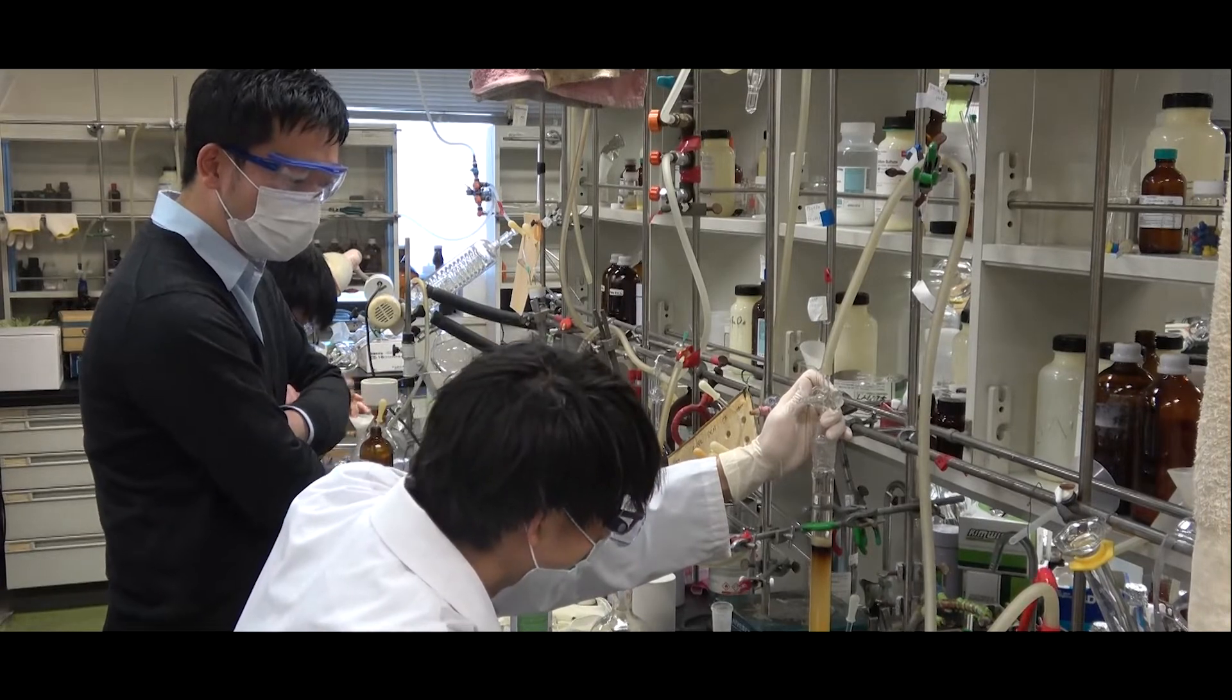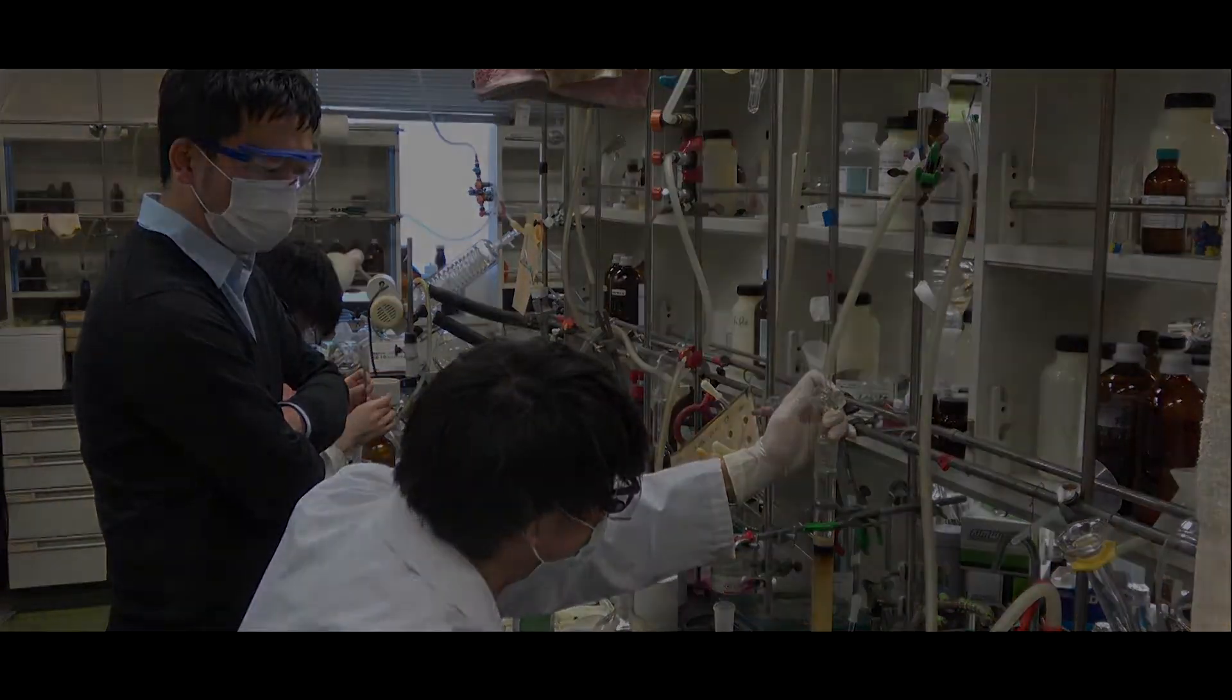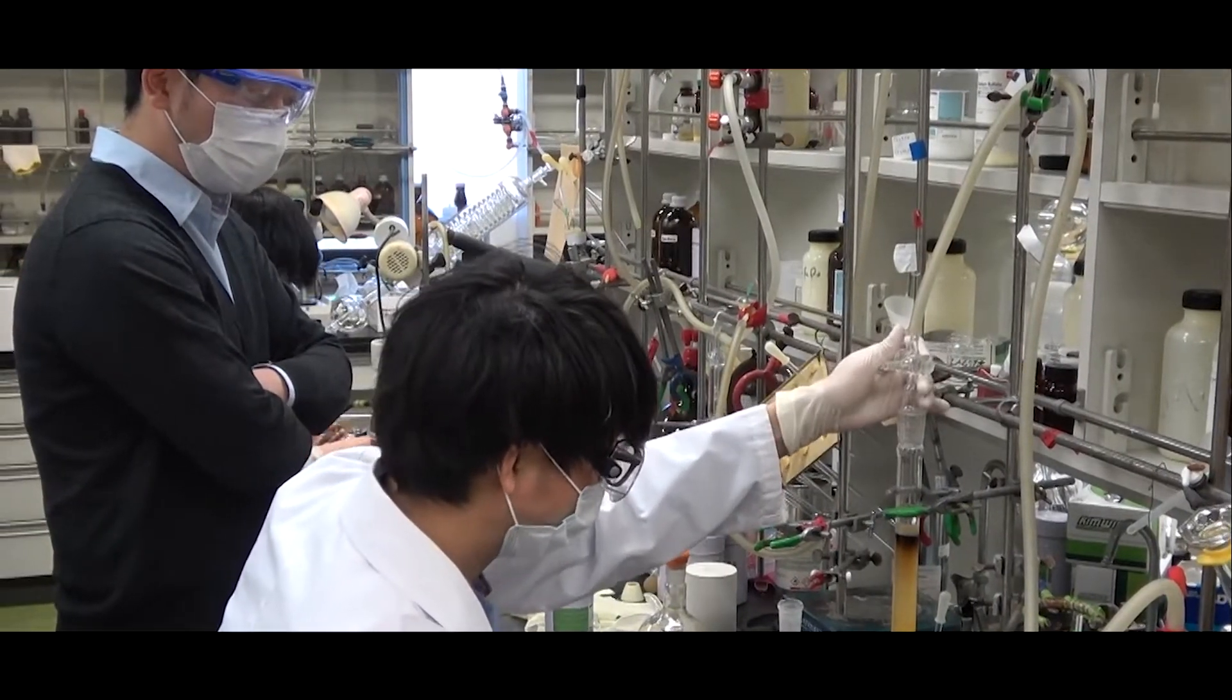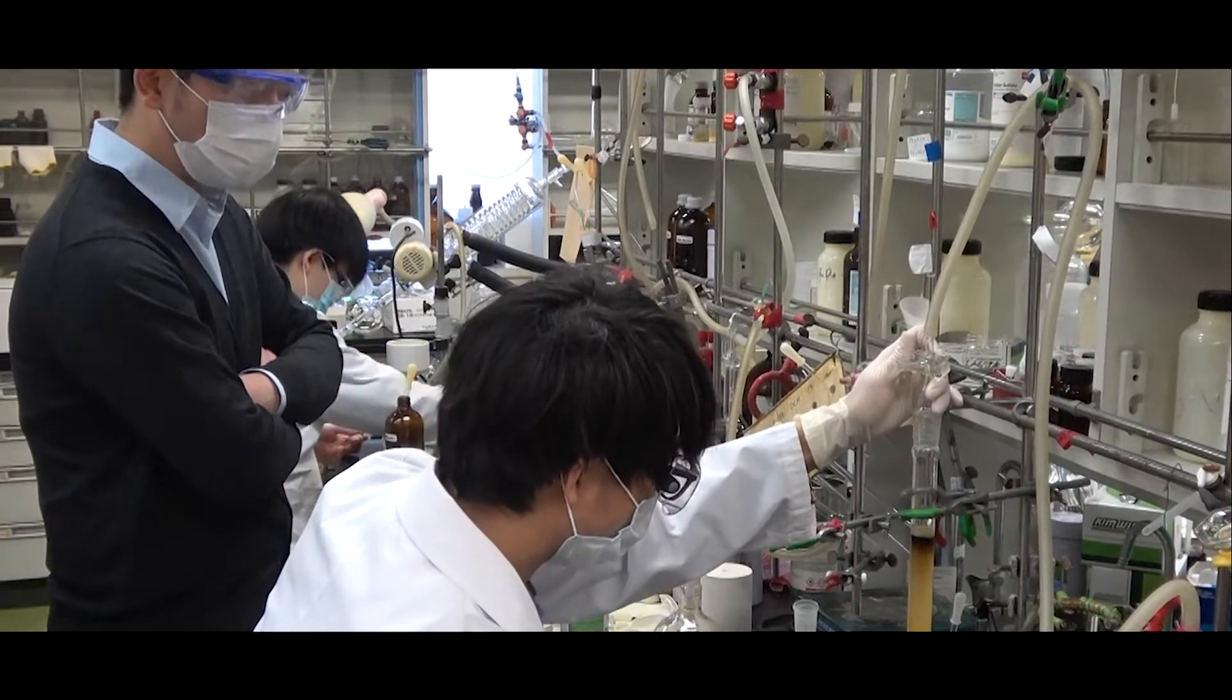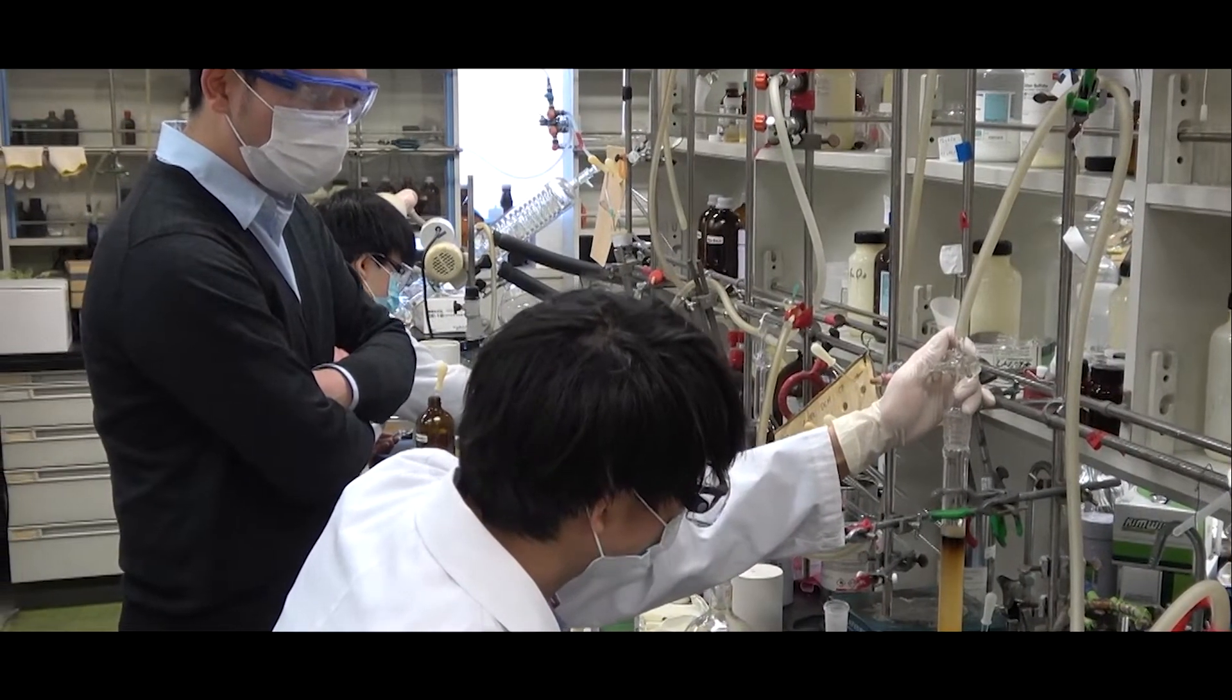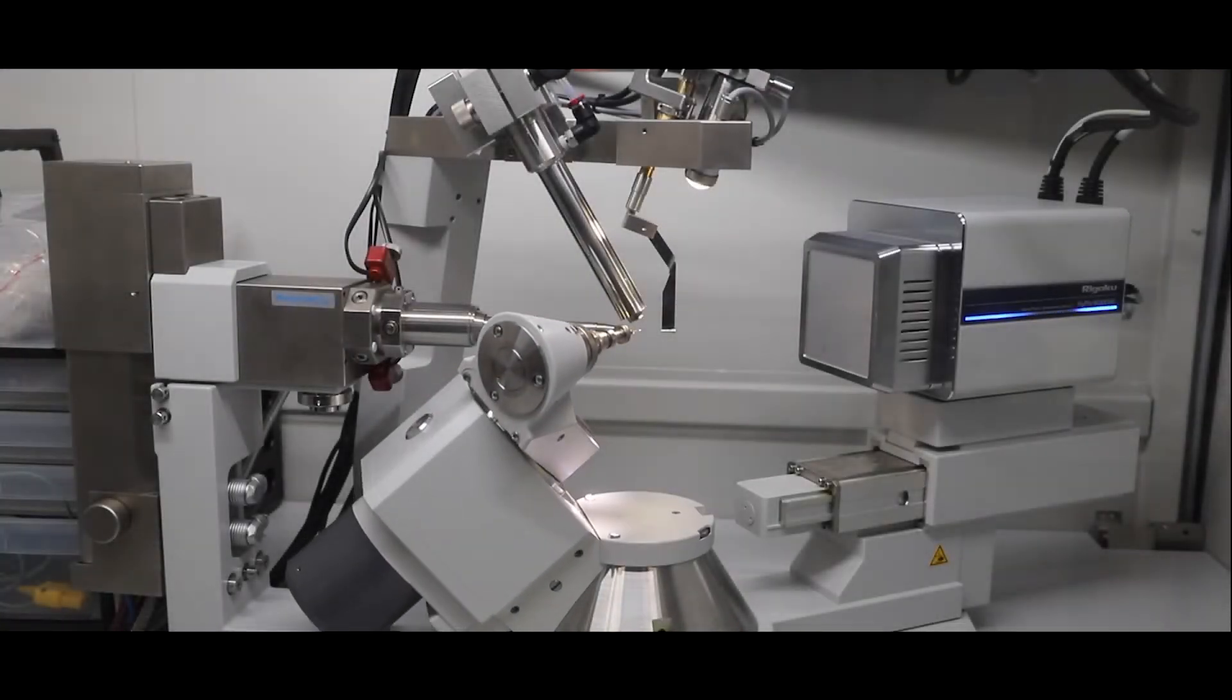A single bond is known to be 1.54 angstroms long. The team succeeded in stretching it to 1.8 angstroms—17% longer than the standard. To do this, the team created shell-like structures, enabling them to stretch the carbon bond while protecting it.